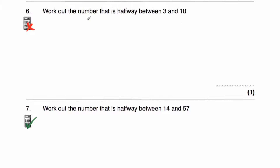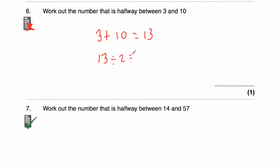Question six says: work out the number that's halfway between 3 and 10. So 3 plus 10 is equal to 13, and if we divide 13 by 2 that tells us the number halfway between them. 12 divided by 2 is 6 and 14 divided by 2 is 7, so this is in between — it's going to be 6.5. So the number halfway between 3 and 10 is 6.5.